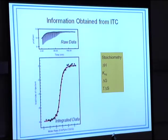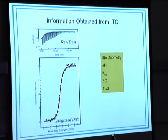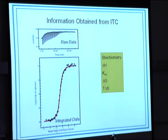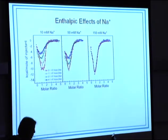The data look like this: every time you titrate, you get a little spike corresponding to heat given off by the system. Eventually it goes to nothing because you have no more DNA to bind. You integrate this data — take the area under the curve — and get a sigmoidal binding isotherm. From this we can get enthalpy, delta G (free energy), the binding constant, and entropy — the big four of thermochemistry.